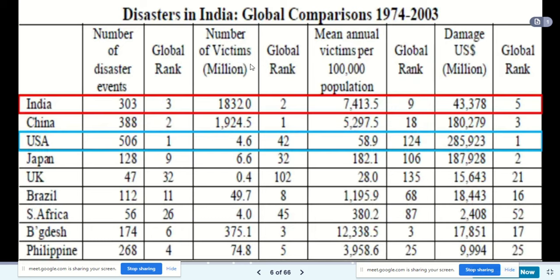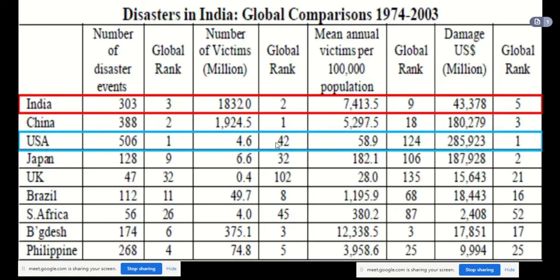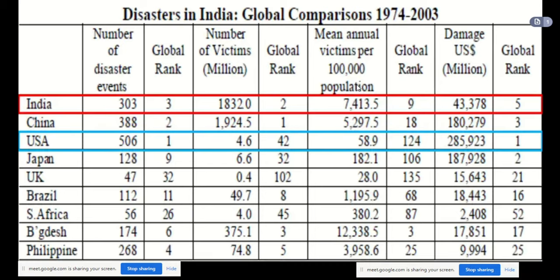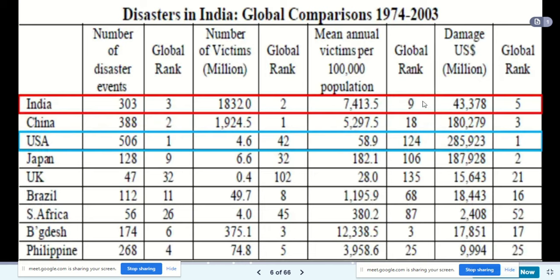In terms of number of victims or people affected, India ranks second globally and China ranks first. Bangladesh ranks third. The US ranks around 42nd because it is a developed country with resources and proper planning. For mean annual victims per 1 lakh population, India ranks ninth — still in the top ten, indicating significant impact.